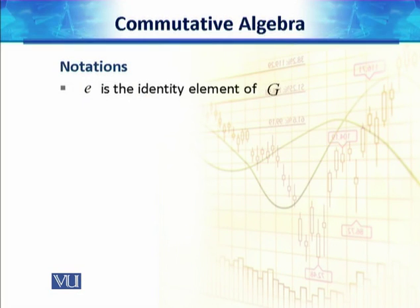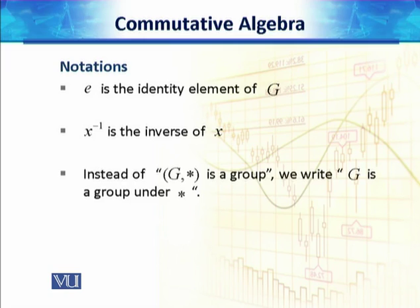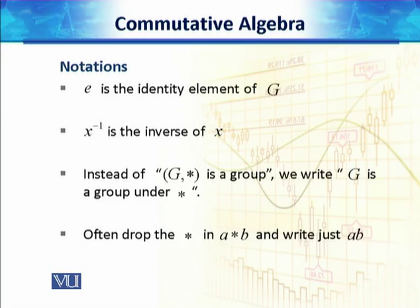Then we will see some notations. We usually call E to be the identity element of the group G. And instead of X' or X'' we usually write X minus 1 is the inverse of an element X from G. Then instead of G star is a group we usually write G is a group under the operation star. And we often drop star in A star B and mostly write just AB.